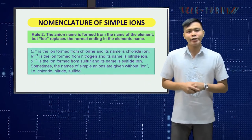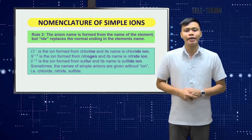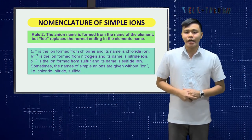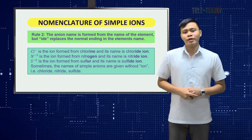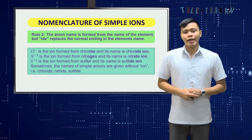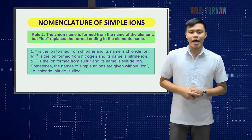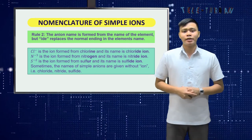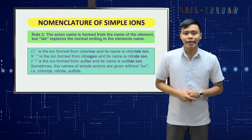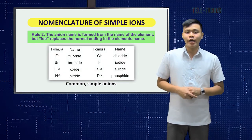Rule number 2: the anion name is formed from the name of the element, but '-ide' replaces the normal ending in the element's name. So Cl⁻ is the ion formed from chlorine, and its name is chloride ion. N³⁻ is the ion formed from nitrogen, and its name is nitride ion. S²⁻ is the ion formed from sulfur, and its name is sulfide ion. Sometimes the names of simple anions are given without 'ion' — for example, chloride, nitride, sulfide. This table gives the names of common simple anions.